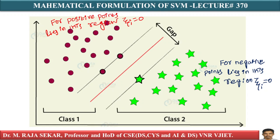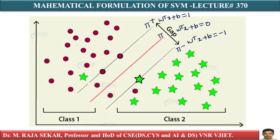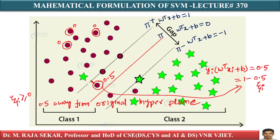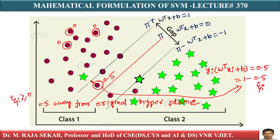As ξ increases — this positive point, 0.5 away — for this particular point you are getting yi into W transpose Xi plus b equal to 0.5, so ξ equals 0.5. What does it mean? This particular point is 0.5 units away from the original hyperplane. For this positive point, π plus is the original hyperplane. ξ greater than 0 — 0.5 is greater than 0.